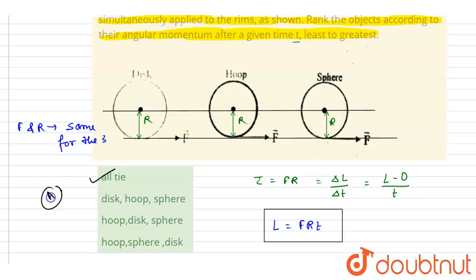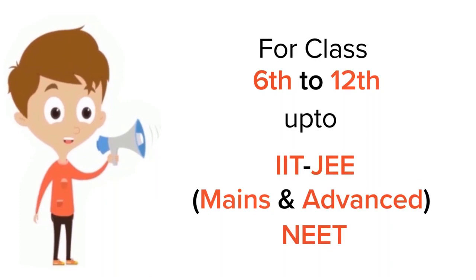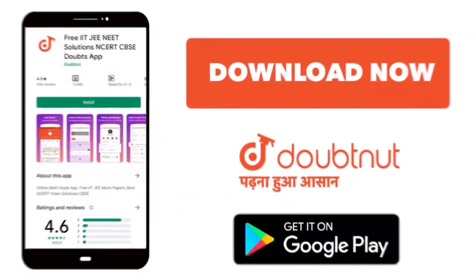So if you see, all tie. A is the correct answer. Thank you. For class 6 to 12, IIT JEE and NEET level, trusted by more than 5 crore students. Download Doubtnet today.